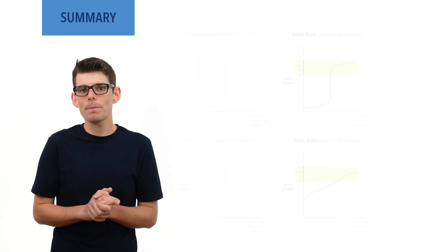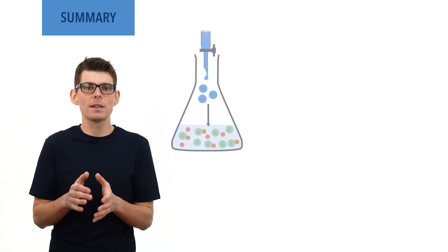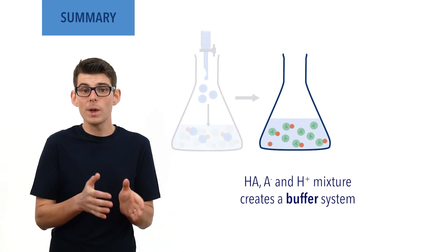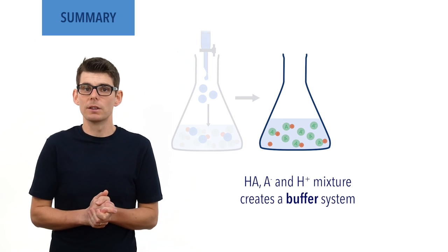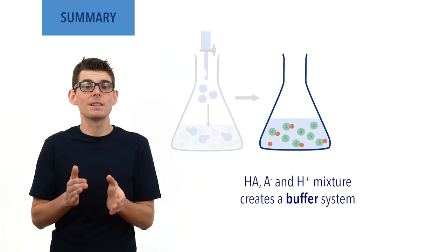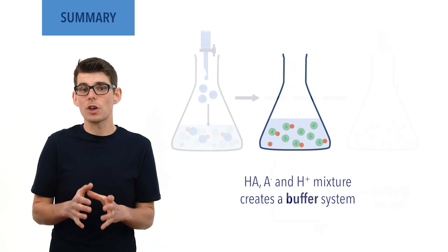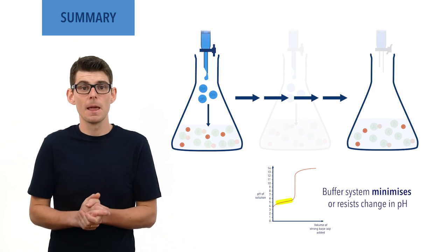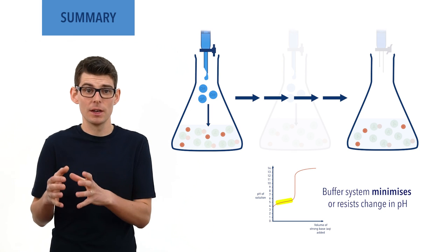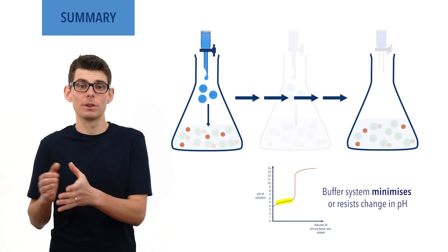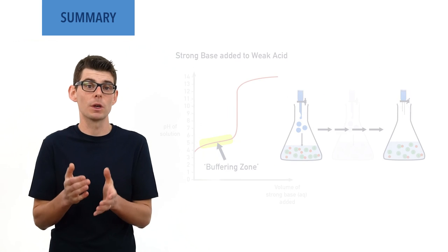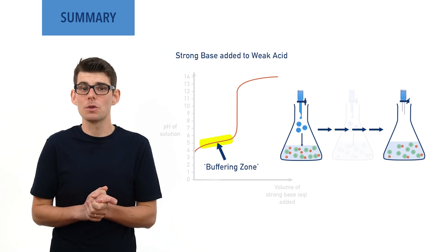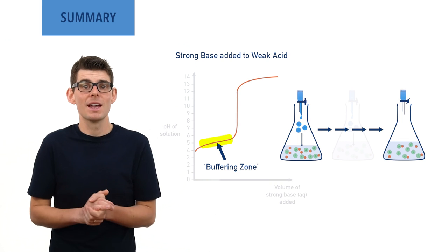For weak acids, as a strong base gets added, conjugate base ion concentration increases, and this creates a small buffer mixture of weak acid molecules, conjugate base ions of the acid, and H⁺ ions. This buffer mixture helps minimize the change to pH of the solution as more base gets added, meaning only a very small change in pH occurs as the volume of base added increases. This can be seen as a buffer zone on pH curves for weak acids with strong bases, where the pH of the solution doesn't really increase as more base gets added.